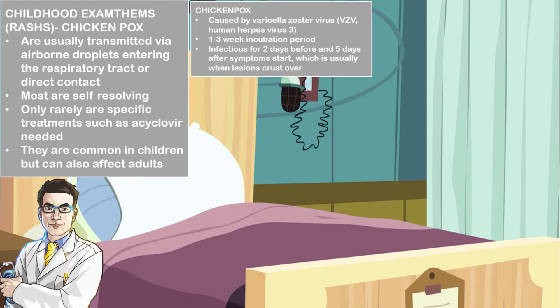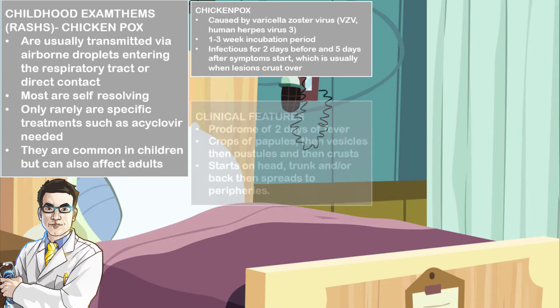Chickenpox is caused by varicella zoster virus, which belongs to the family Herpesviridae — pretty much human herpesvirus 3. It has an incubation period of 1 to 3 weeks, and usually the rash is infectious from 2 days before and 5 days after the symptoms start, which is usually when the lesions crust over.